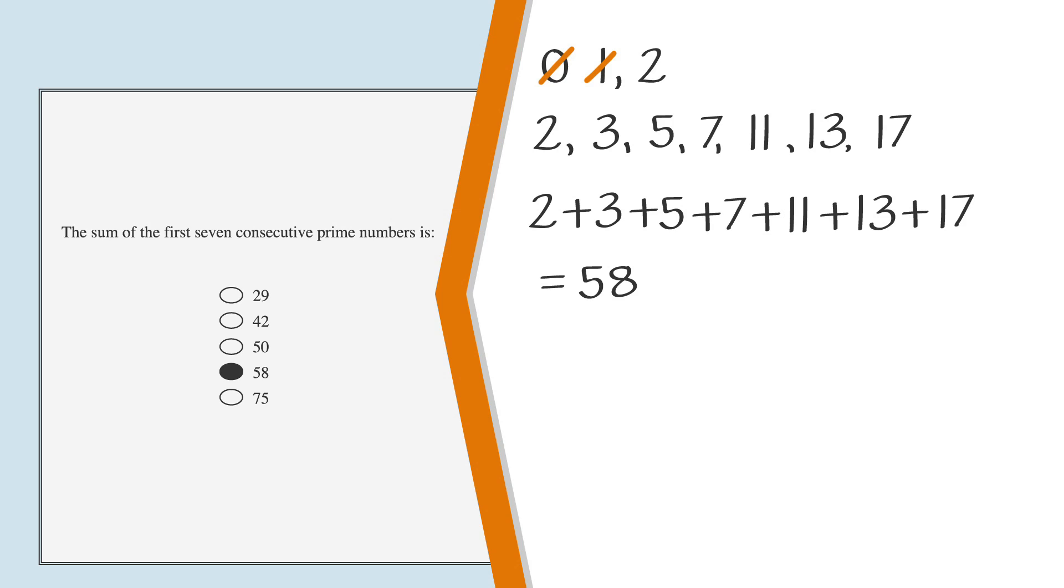Watch out. The wrong answer choices on the GRE aren't random. They're often traps that might look right if you make a simple mistake. For example, if you had mistakenly skipped 2 and started with 3 as your first prime number, then your 7th prime number would be 19. And look, these numbers added together equal 75, which is one of the answer choices.